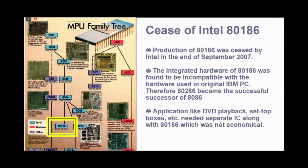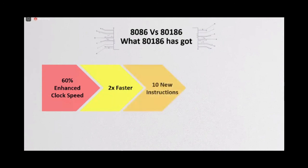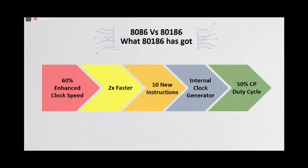In the next slide, it has been mentioned about the advantages of 80186 over 8086. The clock speed of 80186 is enhanced by 60%. The data processing rate is two times faster than 8086. It has additional 10 new instructions. Clock generator is internal, but it was external in case of 8086. The internal clock generator reduces the component count in the system. Clock pulse duty cycle is 50%, whereas it was 33% in 8086. There are many other differences, but these are the few major ones that's worth mentioning.